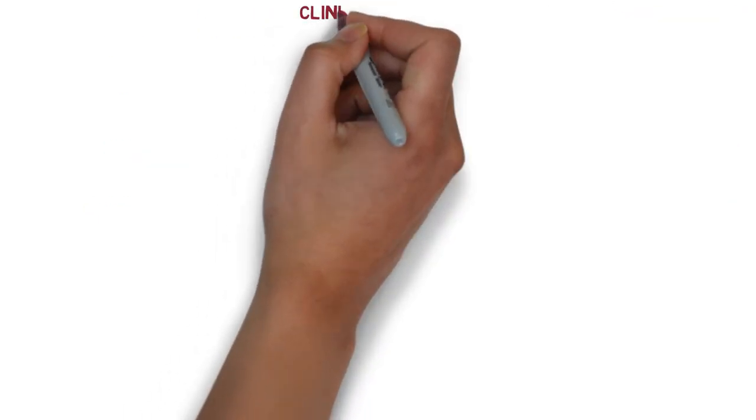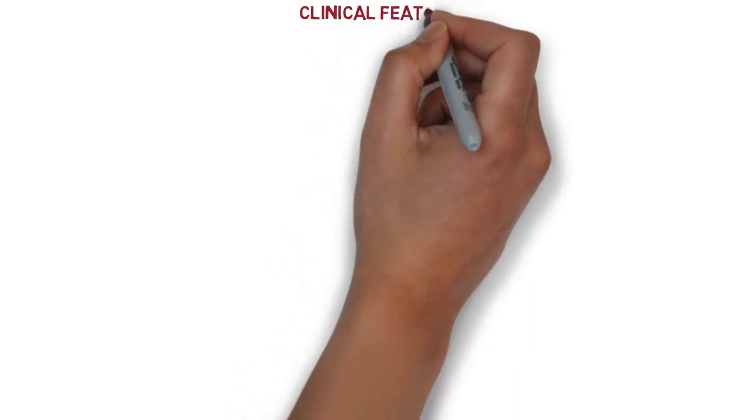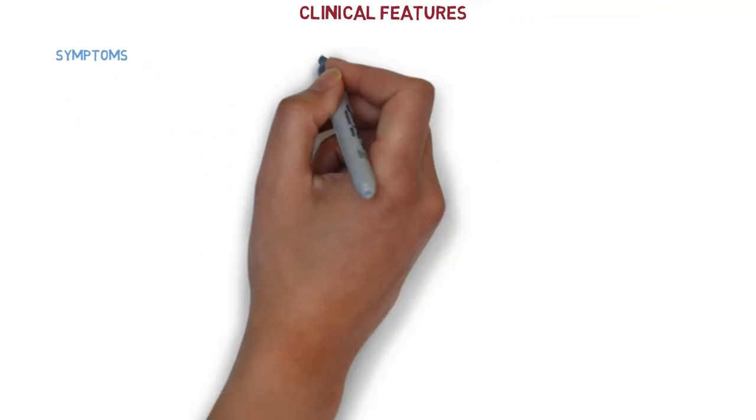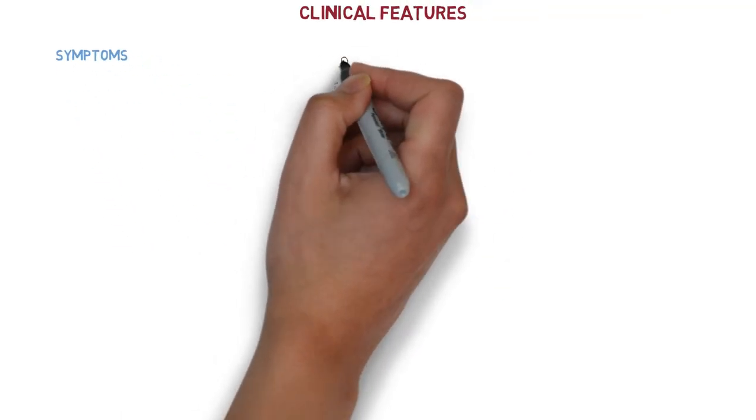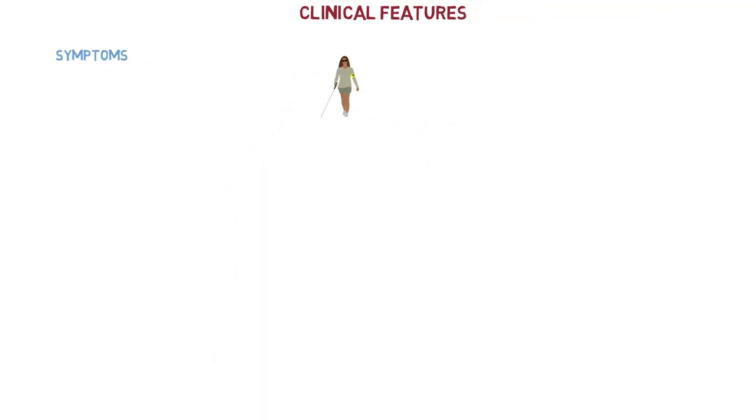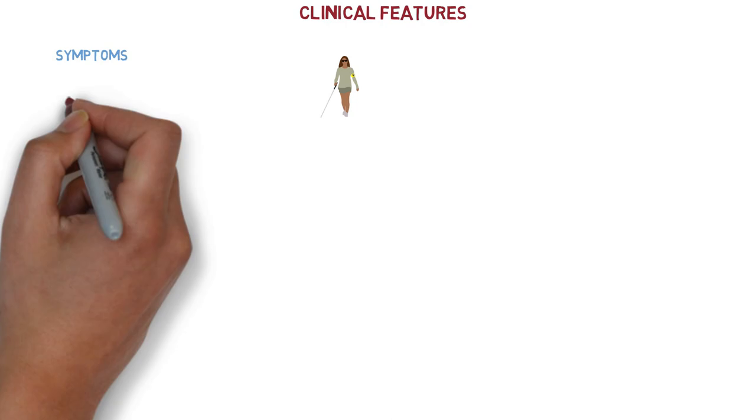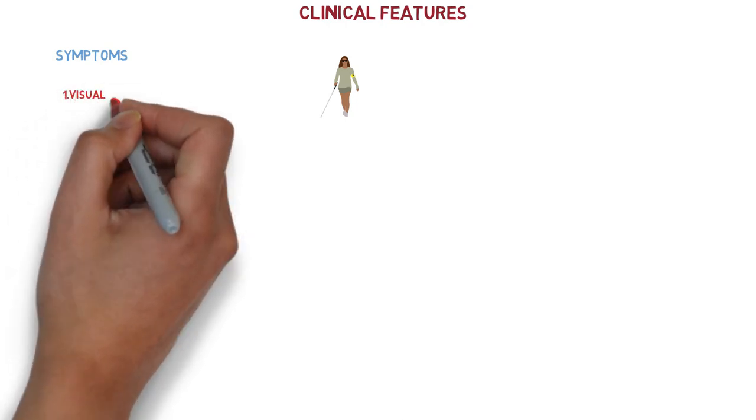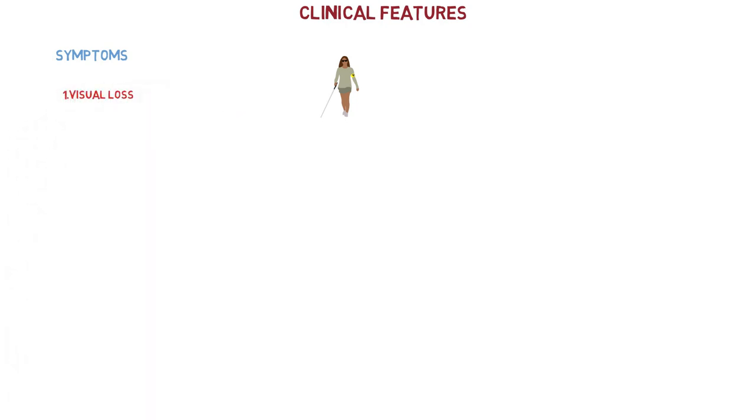We are going toward the clinical features of optic neuritis. First, we will discuss the symptoms and later on the signs. Optic neuritis may be asymptomatic or may be associated with following symptoms. The predominant symptom in a patient suffering from optic neuritis is loss of vision.